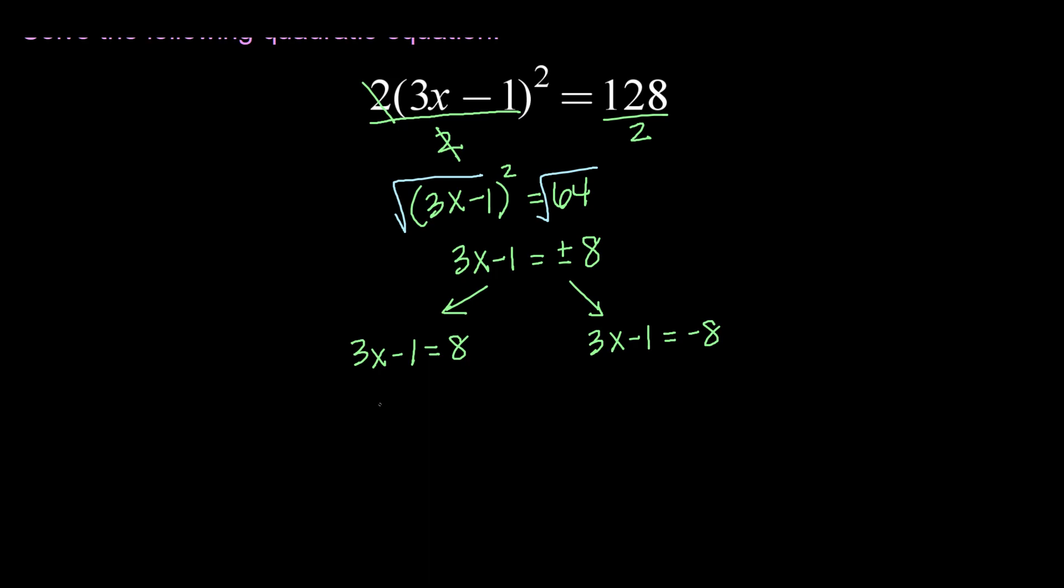Now I'll solve those two linear equations as usual. Add one to both sides, 3x equals 9, divide both sides by 3 and I get x equals 3 as one of my solutions. Doing the same to my other equation, 3x equals negative 7. Dividing both sides by 3, x equals negative 7 thirds is my second solution.